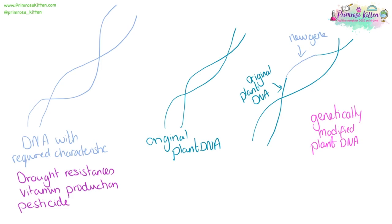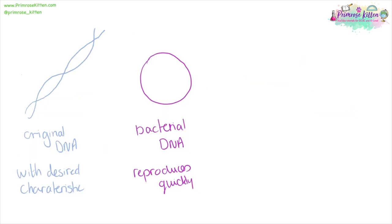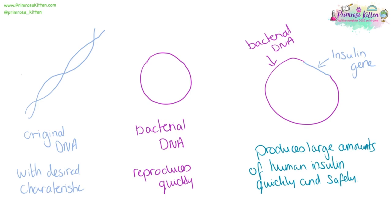Some people don't like genetically modified plants because they think it's interfering with nature. However, genetic engineering has brought about some fantastic advances. One of the most useful is the way we produce insulin today. Previously, insulin used to be harvested from pig cells and that's what people had to inject — it wasn't very efficient. These days we've taken the gene for insulin, taken a bit of bacterial DNA, and because bacterial DNA reproduces really quickly, the insertion of the gene for insulin into the bacterial DNA means the bacteria are now producing insulin. We are now producing large amounts of human insulin quickly and safely — much, much better than injecting pig insulin, making things cheaper, faster, and safer.